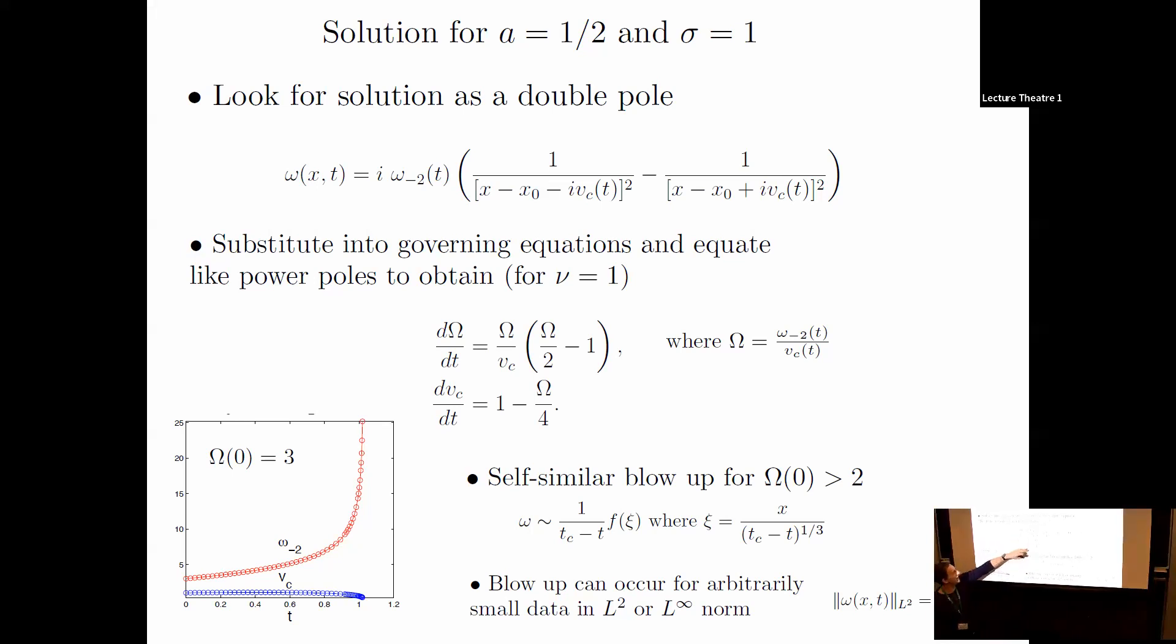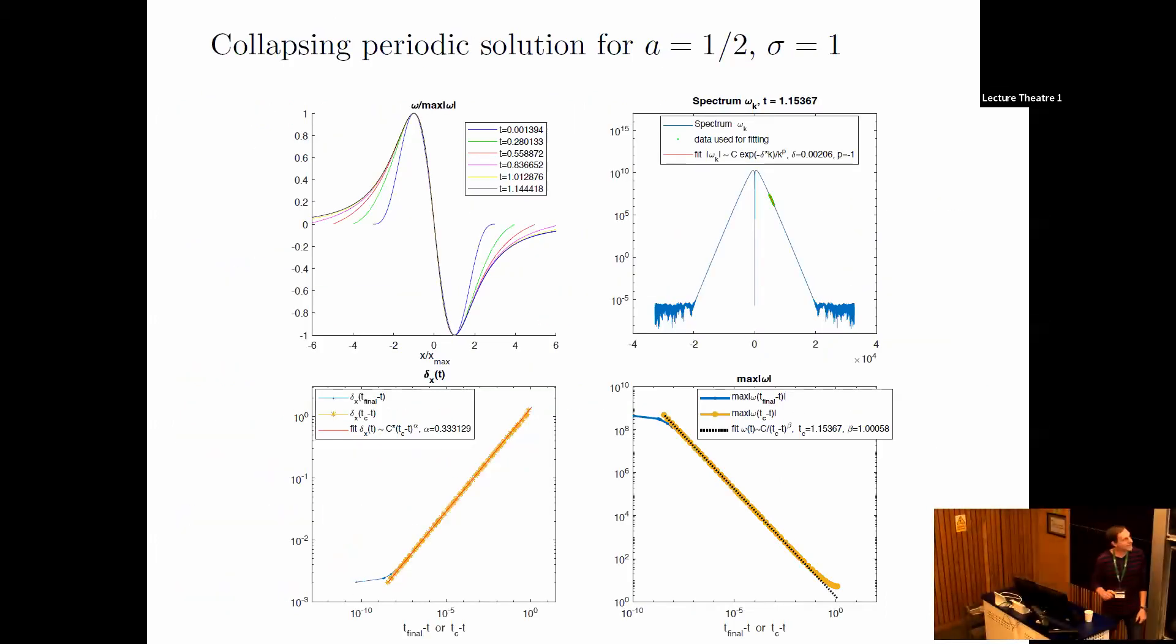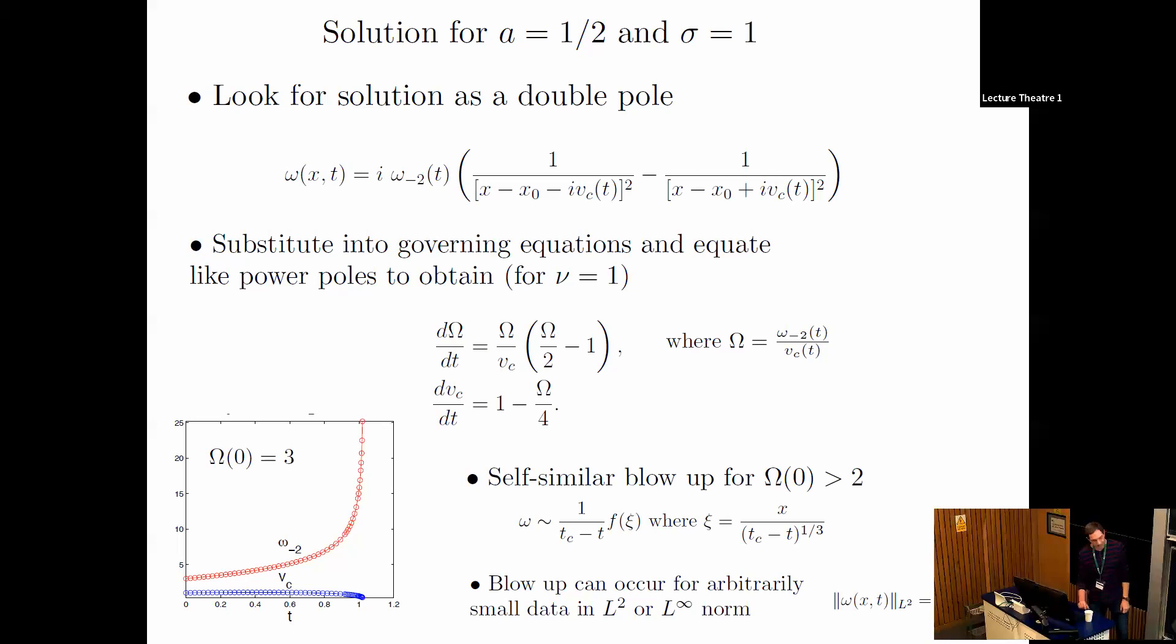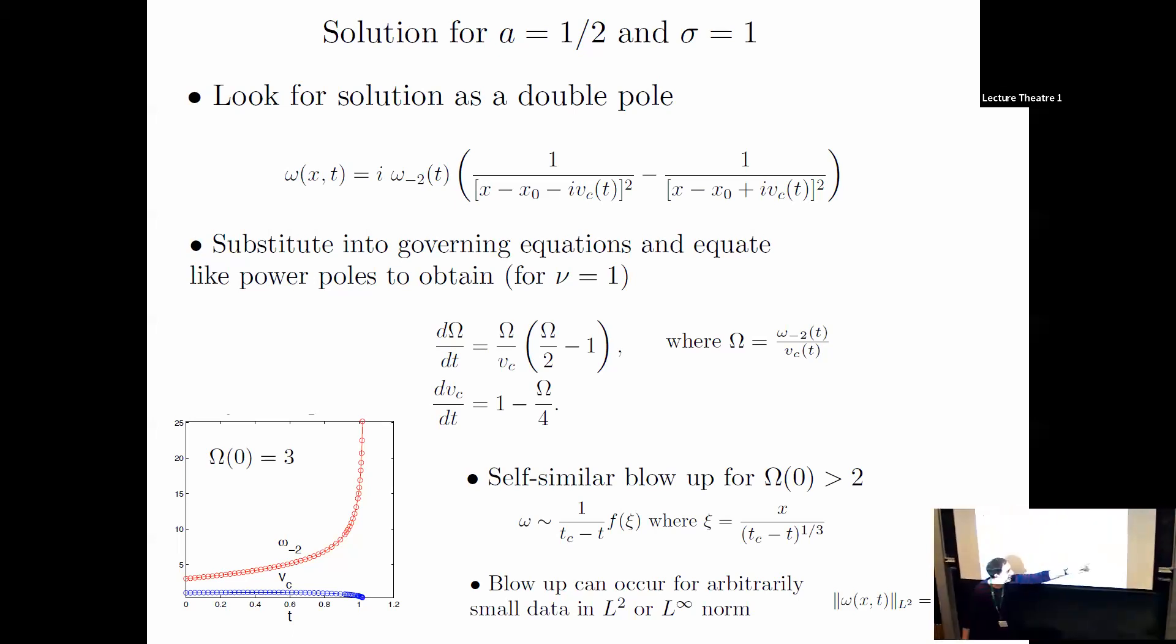We can actually integrate this and find an implicit form solution. That tells us the self-similar form is given with alpha equals one-third and beta equals one. Sound familiar? That was the numerical result. Here I didn't use the exact initial data of the self-similar solution—just some other data that approached it. You'd think it only blows up when omega is greater than two, so no blowup for small data. But if you compute the L2 norm, you can pick omega bigger than two at the initial time with the singularity far away, and the L2 norm will be small, yet you still get blowup. This blows up for arbitrarily small data, even with dissipation.